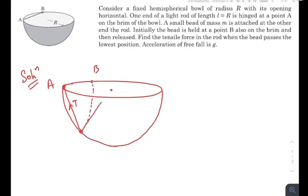This length is L, which is equal to the radius of the hemisphere. This is also R, and this length is also R. This is the vertical distance. Now listen, this one is an equilateral triangle, so this is the bisector at 30 degrees. So this vertical length would be R cos 30.